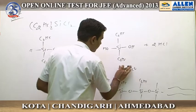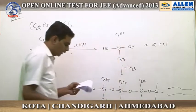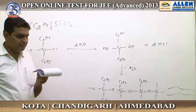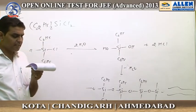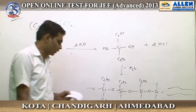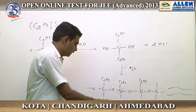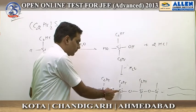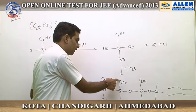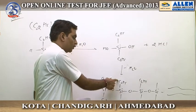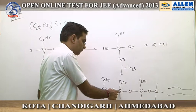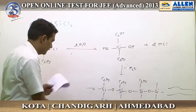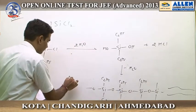Option D states it contains SiSi linkage — that is a false statement, because it actually contains SiOSi linkage. Silicon linkage is present but not directly between two silicon atoms. Therefore, the answer is D.